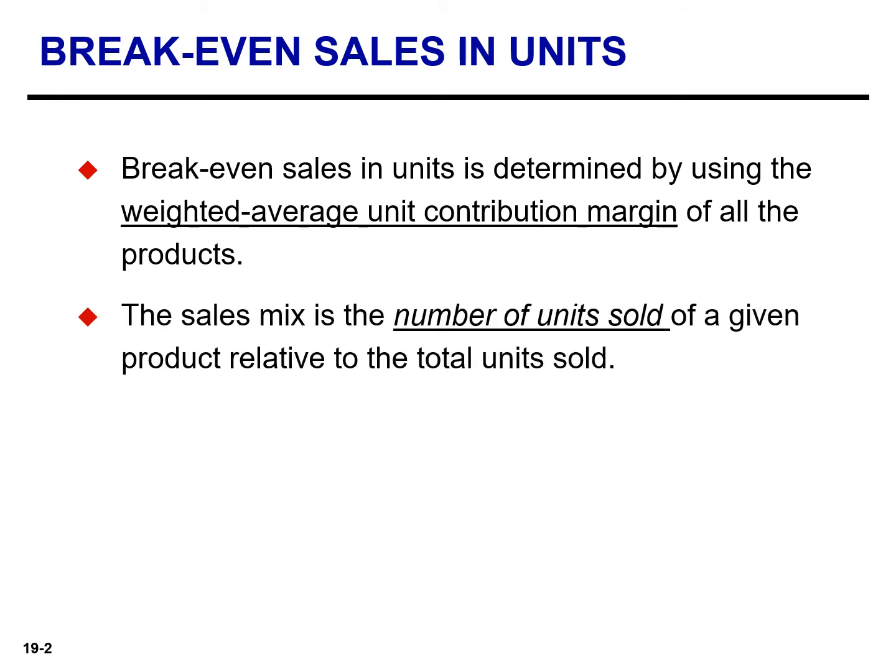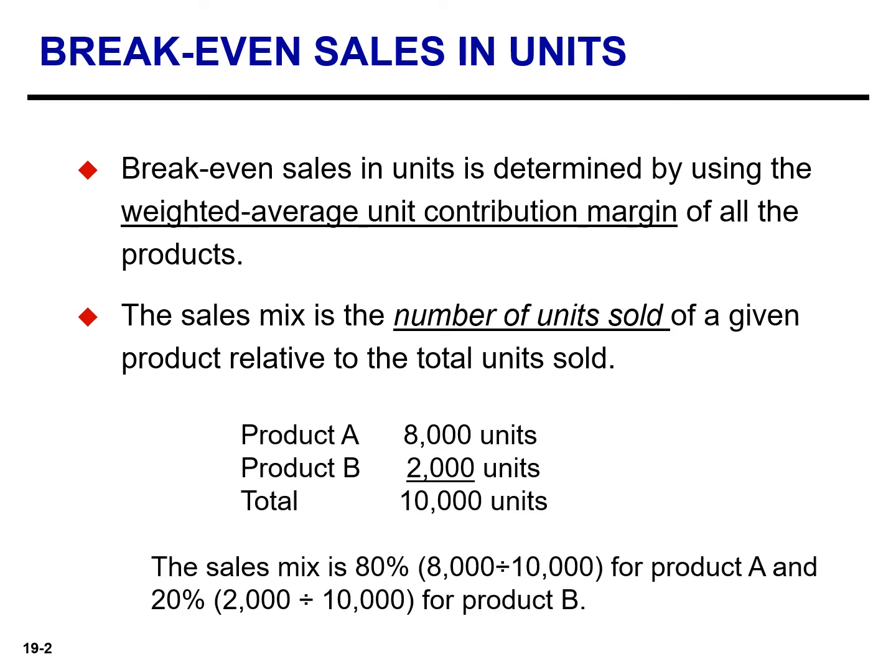The sales mix is the number of units sold of a given product relative to the total units sold. It's really important that when we're calculating sales mix we're using the number of units sold. For example, if a company sells 8,000 units of product A and 2,000 units of product B, the sales mix is 80% for product A and 20% for product B.